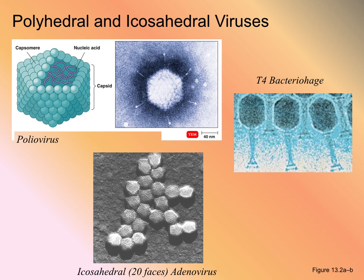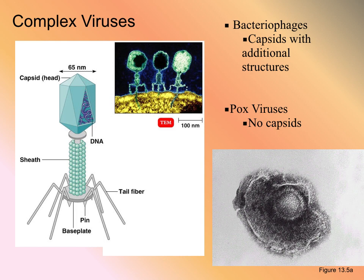Viruses that are non-enveloped are oftentimes very geometric. We have the adenovirus, which is icosahedral — it has 20 different sides. We have the poliovirus, and you can see those viral spikes sticking up off of it. The poliovirus is incredibly small. And then we have the T4 bacteriophages, which are specific to E. coli, though there are other bacteriophages specific to other bacteria.